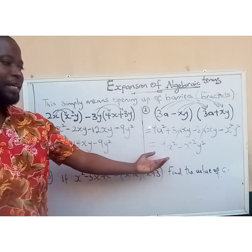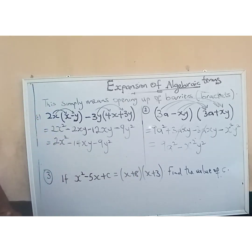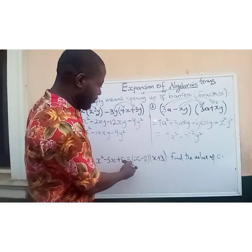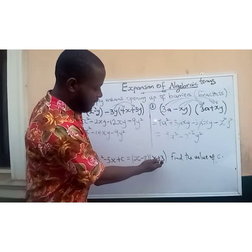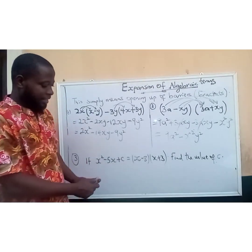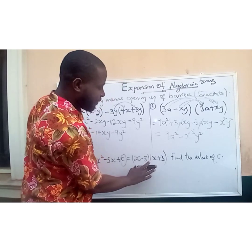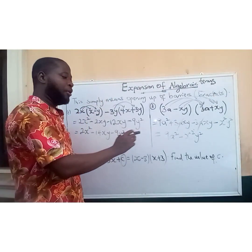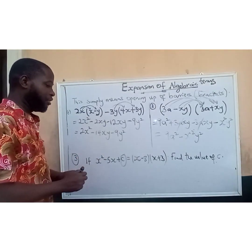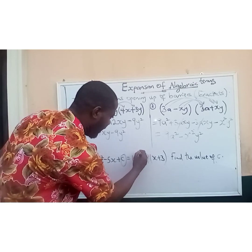We have successfully expanded those algebraic terms by opening up the brackets. Now let's look at the third question. It says: if x squared minus 5x plus c equals open bracket x minus 8 close bracket, open bracket x plus 3 close bracket, find the value of c. The c here is the unknown value we are asked to find. We will expand the right-hand side first.